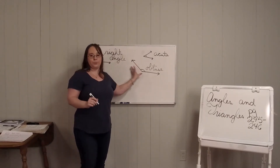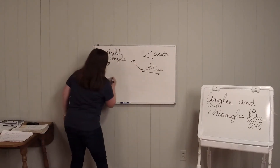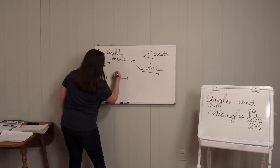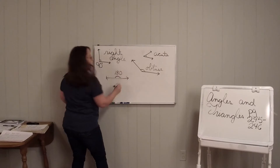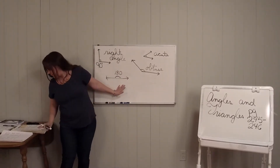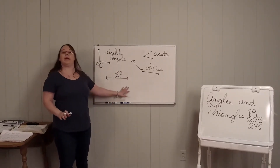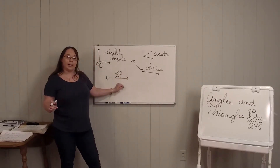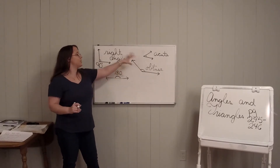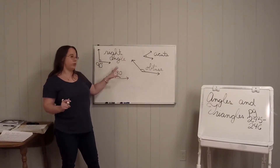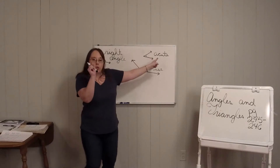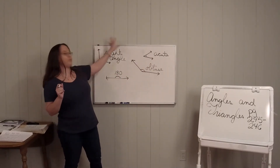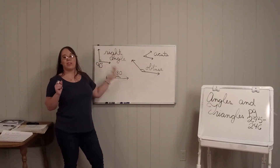It's a big angle. And then you can have a straight angle, which is 180 degrees. So an obtuse angle is less than 180 and greater than 90. So these are the different types of angles you can have: a right angle, an acute little angle, an obtuse angle, and a straight angle — four types of angles.